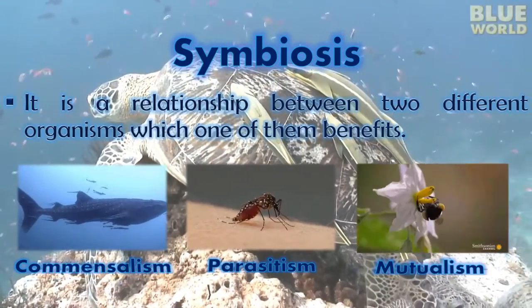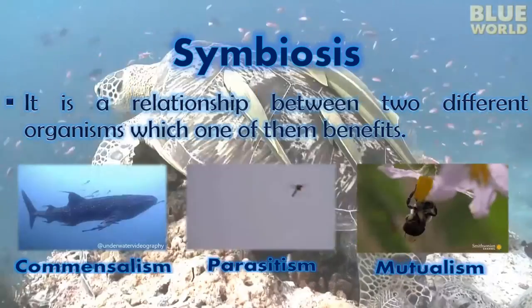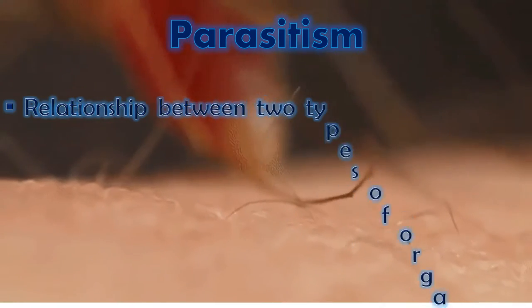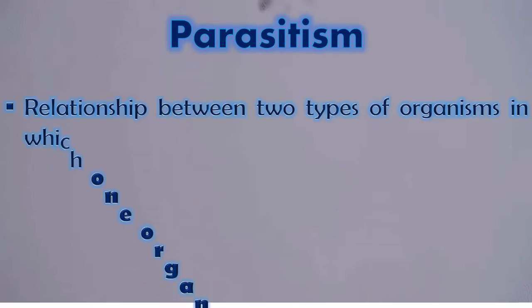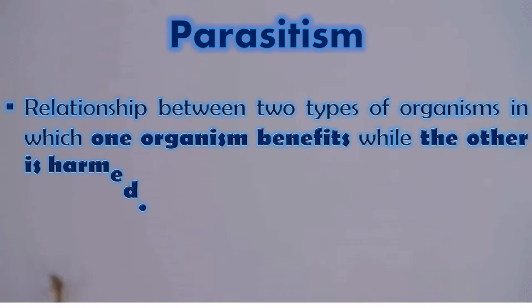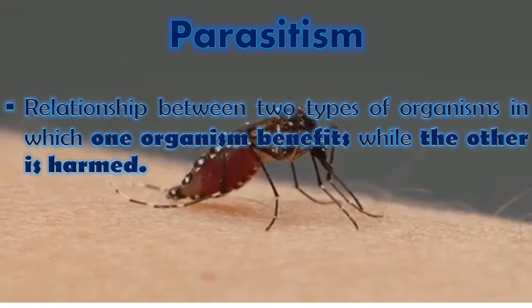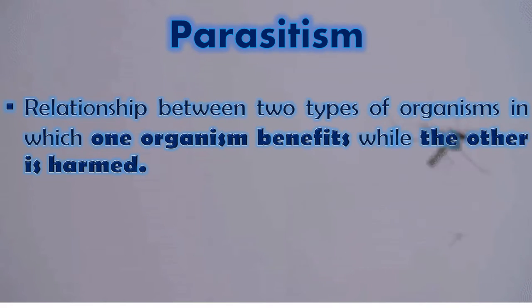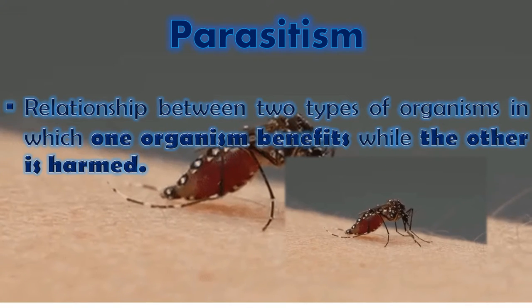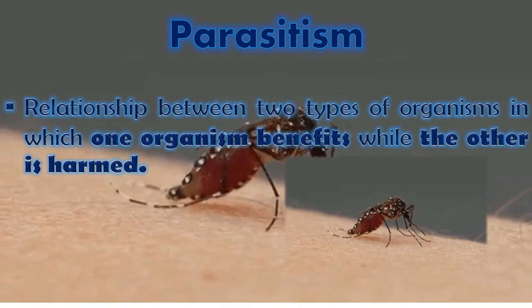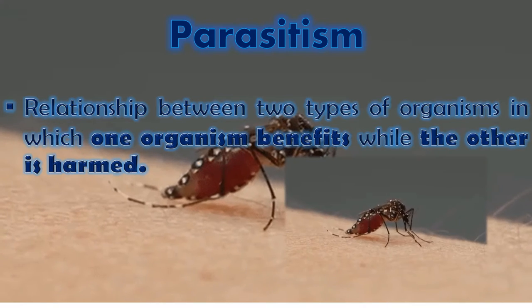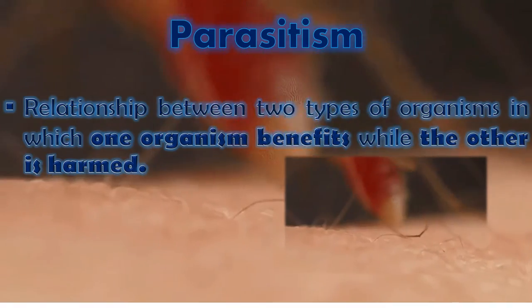Now let's have parasitism. It is a relationship between two types of organisms in which one organism benefits while the other is harmed. For example, the mosquito sips blood from humans while harming them by leaving harmful bacteria inside the body.